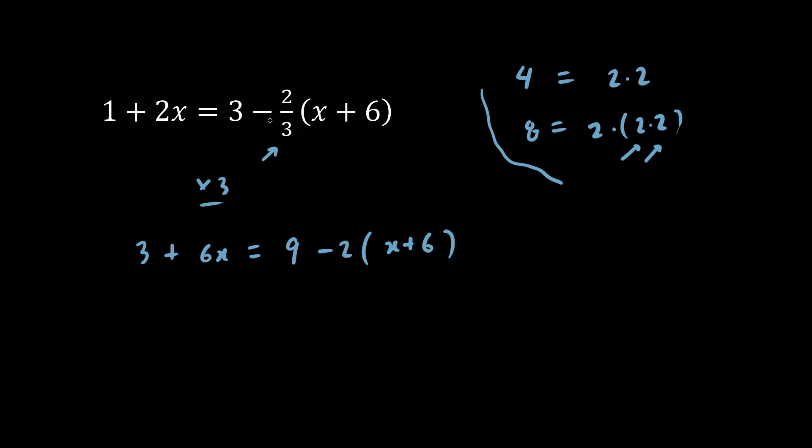So in the same way, when we multiply by 3, this 3 cancels out. We don't end up distributing a 3 inside as well. That would be incorrect.